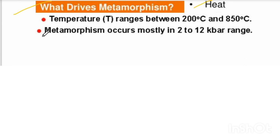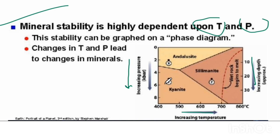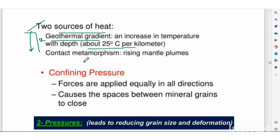What drives metamorphism? Heat, pressure, and metamorphic fluids. Temperature required is 200–850°C. Pressure is in the 2–12 kilobar range, highly dependent on temperature. With increasing temperature, sillimanite forms; with increasing pressure, kyanite forms. The geothermal gradient means that with increasing depth, temperature also increases — about 25°C per kilometer.